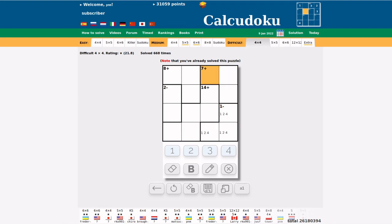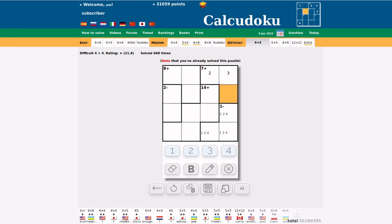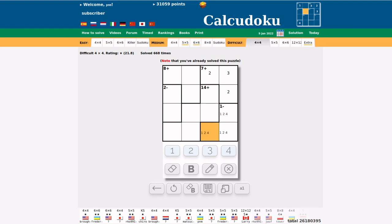Again we're going to look at the options for 7-plus. 3 plus 2 plus 2 won't work because there's a 2 down here somewhere. Similarly, 1, 2, 4 won't work because then we won't have a 3 for example in the right column. So the only possibility left for 7-plus is 3 plus 1 plus 3.